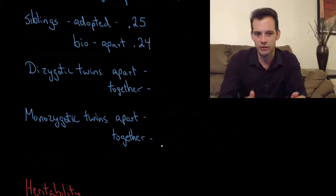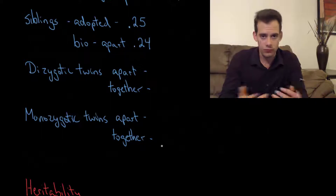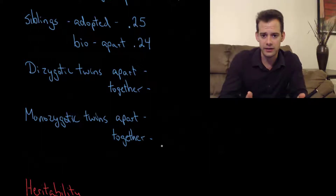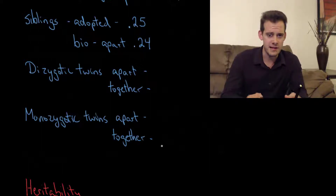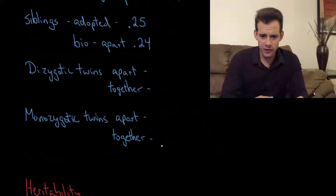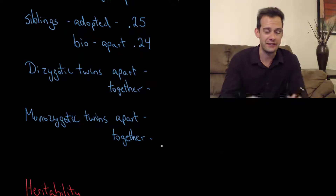The most interesting examples to look at are with twins. With sibling comparisons, they might not be exactly the same age and things can change in the home environment over time — having older or younger siblings may play a role in the child's development. So we want to look at dizygotic twins, because these are siblings who share 50% of their genes but are being raised in more similar environments, since they're the same age in that environment at the same time. Whereas with non-twin siblings raised five years apart, the parenting environment may have changed over those years.